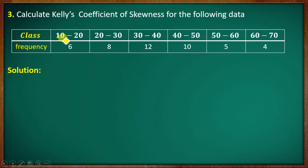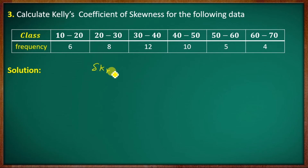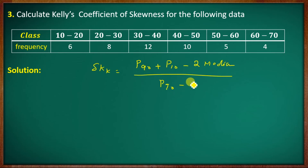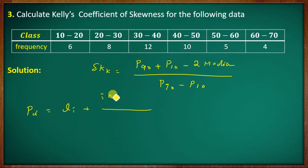Third question: calculate Kelly's Coefficient of Skewness for the following data. Classes are 10-20, 20-30, 30-40, 40-50, 50-60, 60-70 with frequencies 6, 8, 12, 10, 5, 4. For continuous frequency distribution, the percentile formula is: Li plus i times (n by 100 minus cumulative frequency) divided by f, into class width C. Total N equals 6 plus 8 plus 12 plus 10 plus 5 plus 4 equals 45.